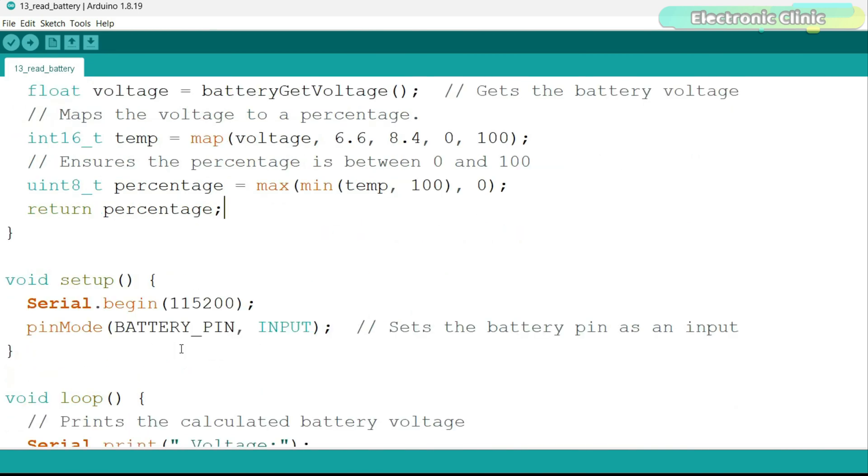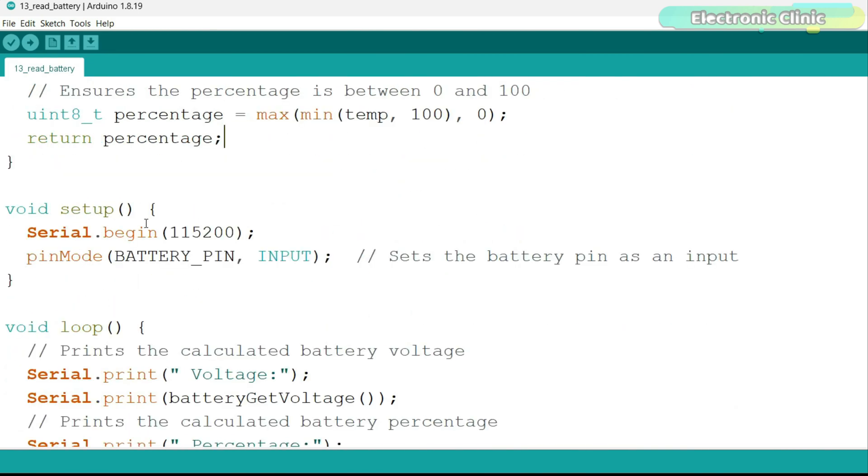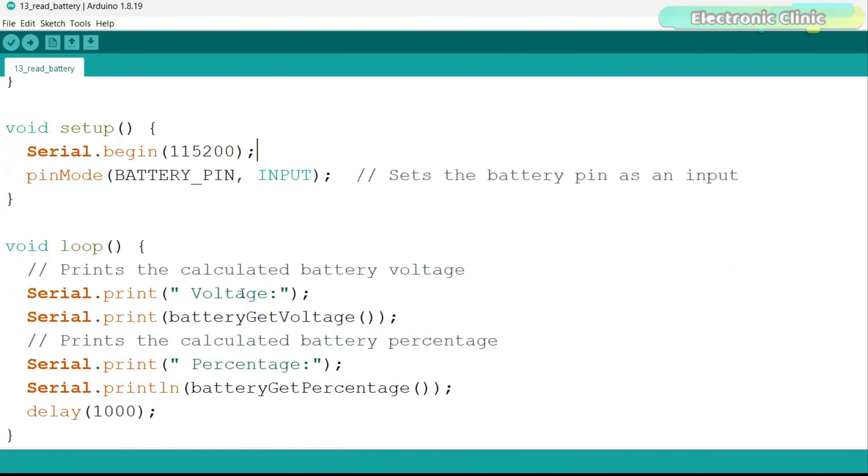Finally, we return the percentage. Inside the setup function, I have activated serial communication. And this time, I am using 115200 as the baud rate. Using the pin mode function, I have set the battery pin as the input. And then in the loop function, we send the battery actual voltage and percentage to the serial monitor.